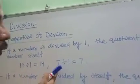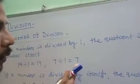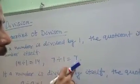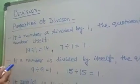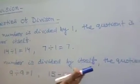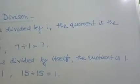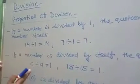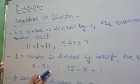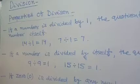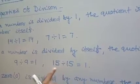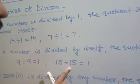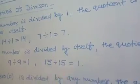Another example: 7 divided by 1 is equal to 7. Look here — the number and our quotient are both the same. Our second property: if a number is divided by itself, the quotient is 1. For example, 9 divided by 9 = 1, and 15 divided by 15 = 1. When we divide the same number with itself, our quotient will be 1.